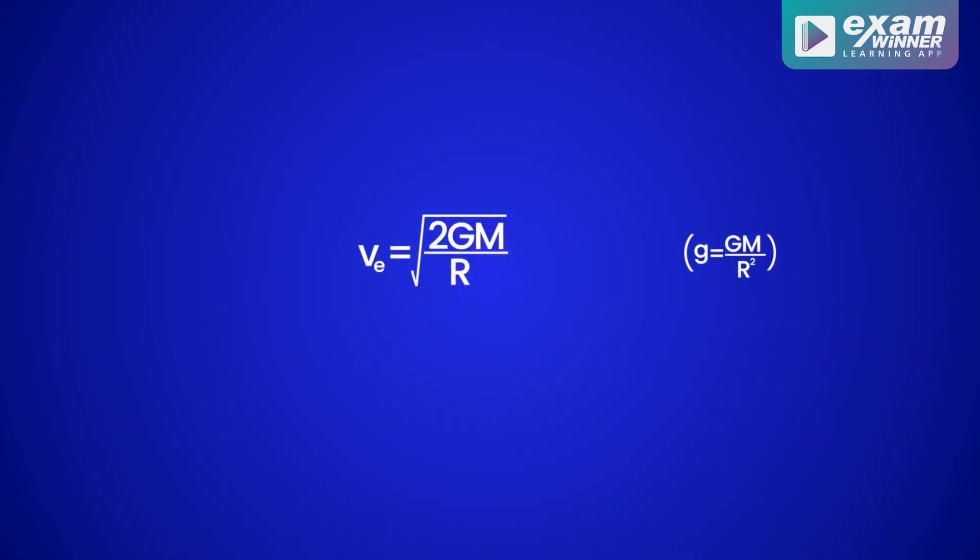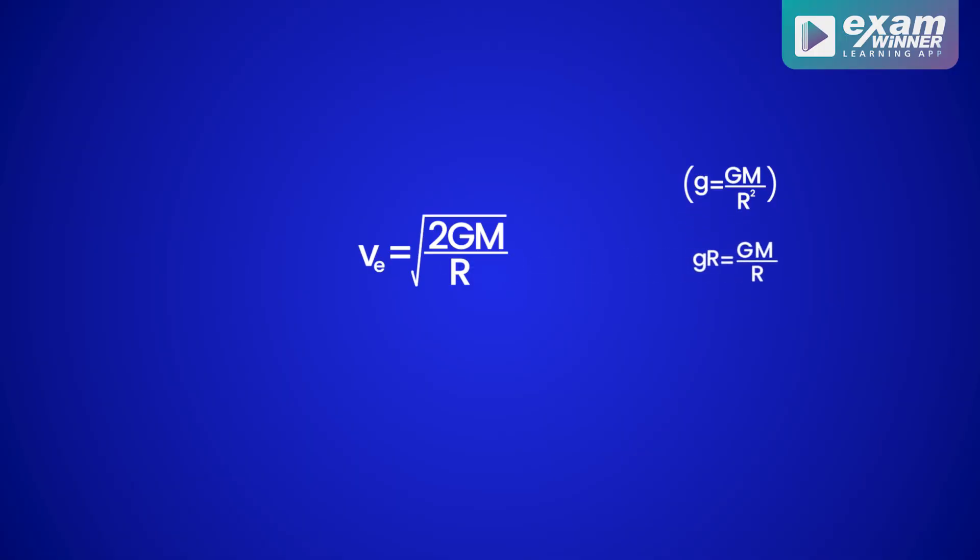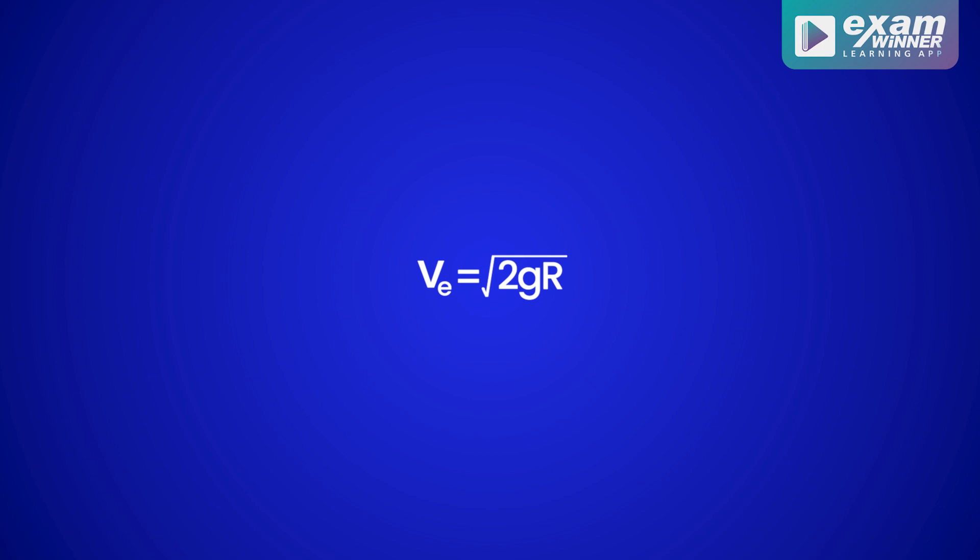Now let's simplify this expression. We know that small g equals capital G times capital M divided by r squared. From this, GM over R equals small g times R. Substituting into the escape velocity expression, escape velocity v_e equals the square root of 2gR.